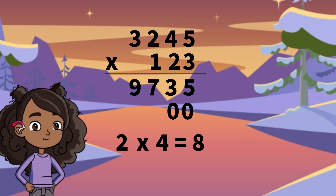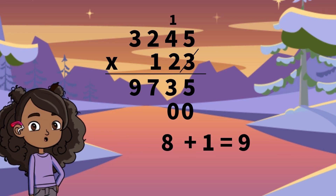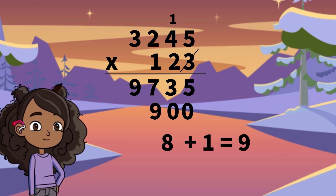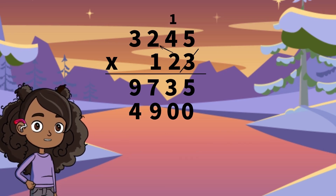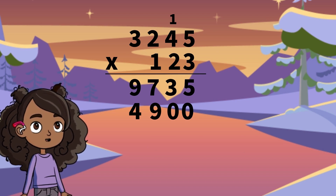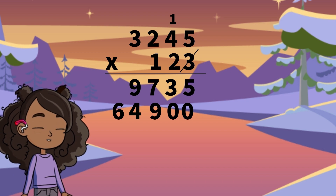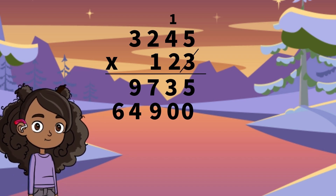2 times 4 equals 8, plus the 1 you carried over is 9. 2 times 2 equals 4. 2 times 3 equals 6. We are now finished with our second answer row.